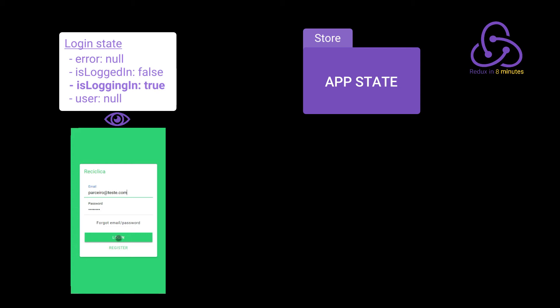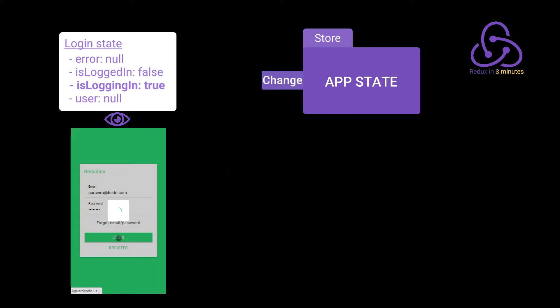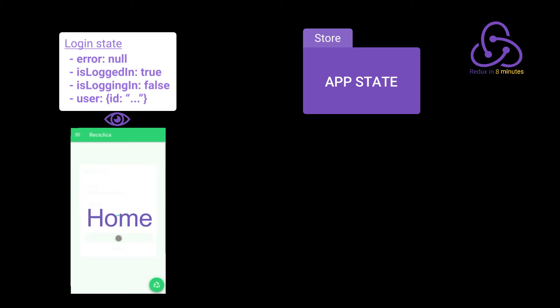The login page is watching the login state, so it will realize the user is trying to log in and will show the loading component again. Now let's finally imagine the login was successful. The service that called the back end will fire a new event to the store and the store will have its login state updated. The login page will realize the user is not logging in anymore and will hide the loading component. It will also realize that now the user is logged in, so the login page redirects the user to the home page. The login page is simply reacting to the store.